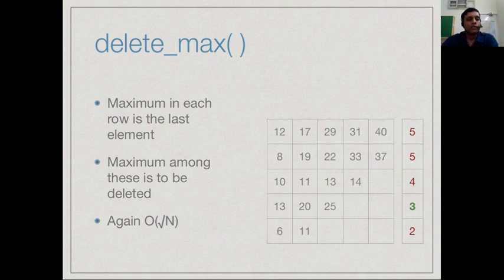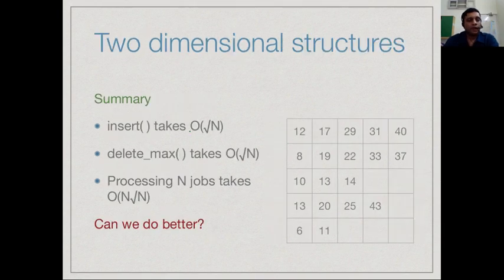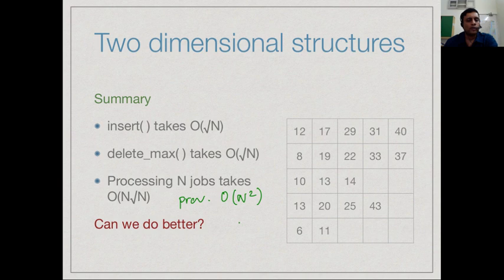We have now achieved a data structure which keeps track of elements in a priority queue where insert takes order root n time, delete max takes order root n time and therefore now processing a sequence of n jobs takes n root n time. Previously it was order n square. We have reduced from order n square to order n to the 3/2. This is just a sampler to explain that a two dimensional structure can give you significant savings over a linear structure.